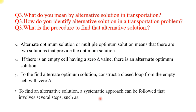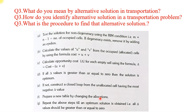Third question: what do you mean by alternative solution in transportation? It can also be asked as how do you identify an alternative solution in a transportation problem, or what is the procedure to find the alternative solution. We have given three points for the definition and the steps are on the next slide — you can read through or take a screenshot. The following slide covers the procedure to find the alternate solution.